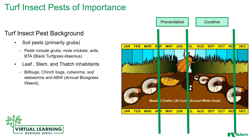The beetles are out and about in late spring and early summer. They'll lay their eggs sometime around the Fourth of July, and those eggs will hatch out into the first instar grubs. These grubs grow and are very hungry, eating a lot of roots and causing a lot of trouble on the turf. As the season goes on and temperatures get colder, they'll start to go lower into the soil, anywhere from 3 to 12 inches.